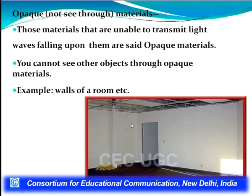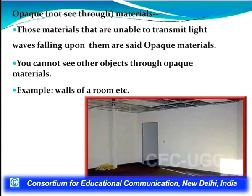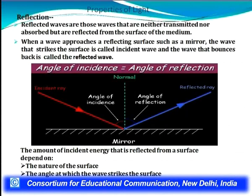Opaque materials are those through which we cannot see. Those materials that are unable to transmit light waves falling upon them are called opaque materials, and we cannot see other objects through them. Examples include the walls of rooms.